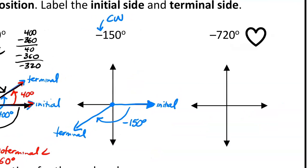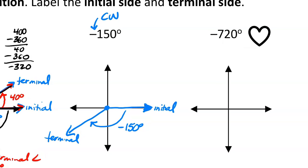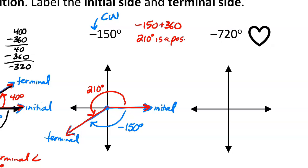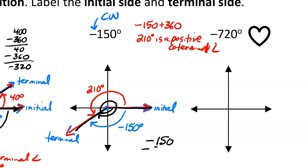One more example — you can pause the video and try to figure these out. For negative 150 degrees: a positive coterminal angle is negative 150 plus 360, which equals 210 degrees. For a negative coterminal angle, we go around the circle another round: negative 150 minus 360 equals negative 510 degrees.